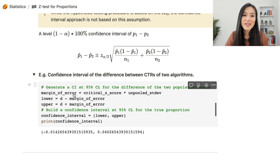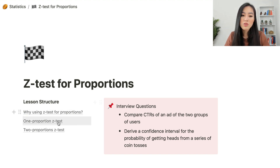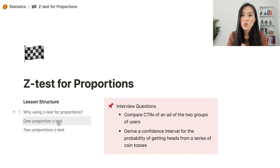In this lesson, you learned about the z-test for proportions. We talked about why we use the z-test instead of the t-test for proportions, and also the test statistic and testing procedure for both the one-proportion z-test and the two-proportion z-test. I hope you learned something new from this video. I will see you in the next one.